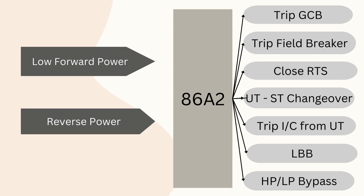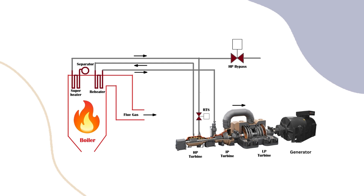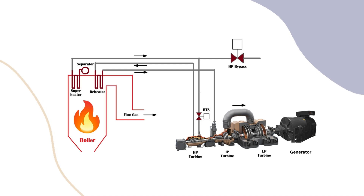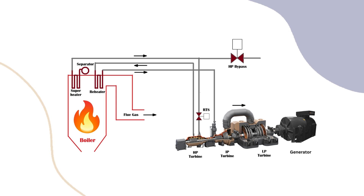Next, we will understand how Class B protection works. In this scheme, the trip command goes to the RTS to trip the turbine, the HP bypass to open, and the reheater protection system. Modern thermal power plants have three turbines: High Pressure (HP), Intermediate Pressure (IP), and Low Pressure (LP) turbines, sharing a common shaft with the generator rotor. High-pressure superheated steam from the boiler goes to the HP turbine, then to the reheater of the boiler to gather more energy, and finally passes through the IP and LP turbines.